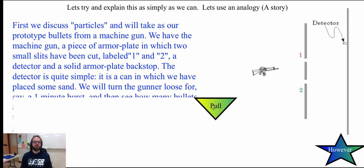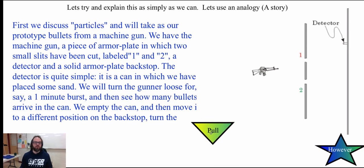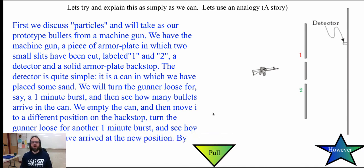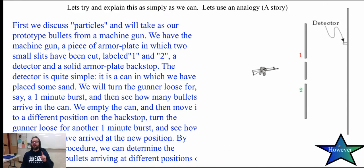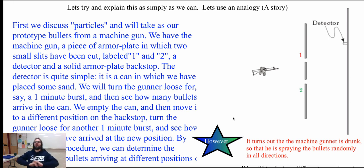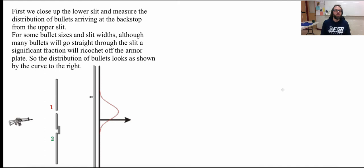We turn the gunner loose for one minute, then see how many bullets arrive in the can. We empty the can, move it to a different position on the backstop, and repeat. We keep repeating this procedure to determine the distribution of bullets at different positions. The gunner will be drunk, so he sprays bullets randomly in every direction — just like light, which propagates in every direction, not just one straight line. First, we close one of the two slits and measure the distribution, getting a nice bell curve.